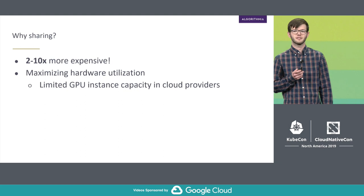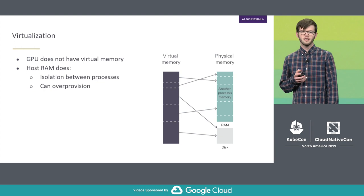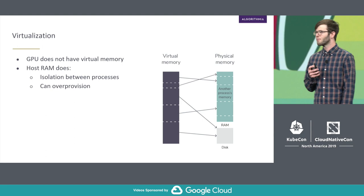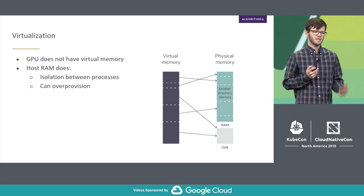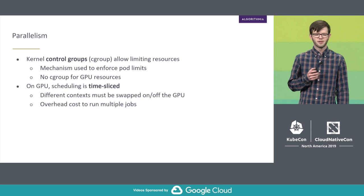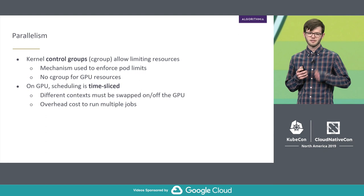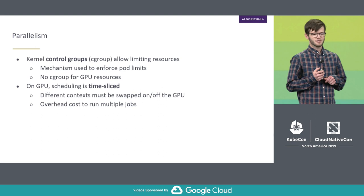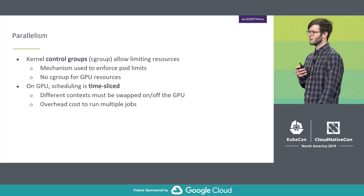So what's the problem? Unlike other hardware resources, the hardware and operating system do not support virtualization in the same way. While you might be used to things like virtual memory, which virtualizes physical host RAM, there isn't the same type of thing for GPU memory. There's not the same isolation between processes, and you can't do things like over-provision and use swap space. There's also difficulty limiting access to the GPU. The Linux kernel has control groups, or C groups, which can limit processes' CPU, RAM, namespacing, and a whole bunch of other things. This is the mechanism used to enforce pod limits in Kubernetes, but there's no such C group implementation for GPU memory or other resources.